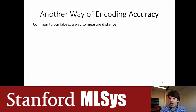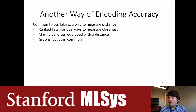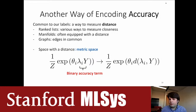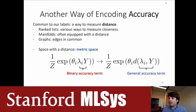We still want a notion of accuracy, but it needs to generalize across all these different kinds of label spaces. What all these diverse label types share is a way to measure similarity — a distance. For rankings, we can measure how close two rankings are; for manifolds, there are geodesic distances; for graphs, edge-based distances. More generically, this is a metric space. So we replace products λ·y with distances d(λ, y): instead of wanting the product to be large, we want the distance to be small. The more accurate a labeling function, the smaller its average distance to the true label.